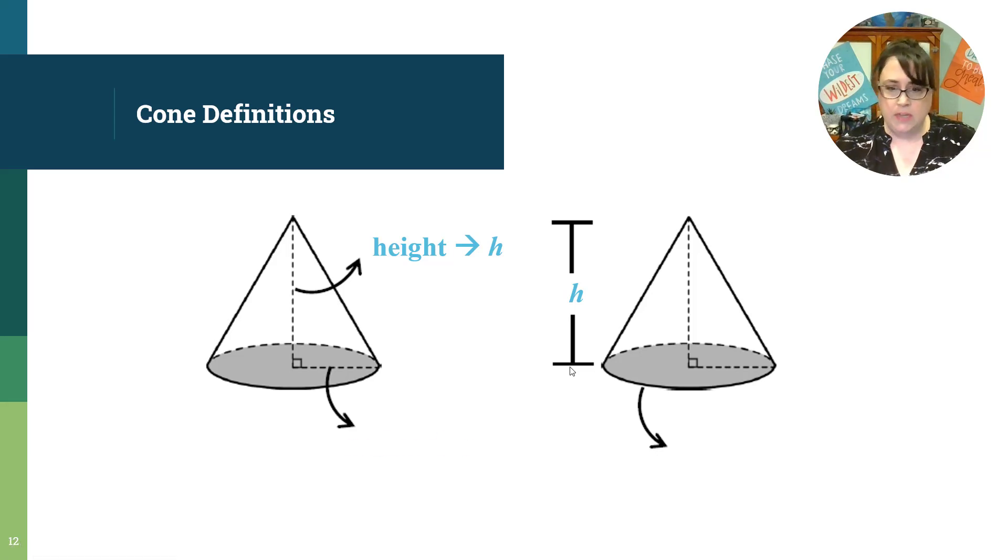And then you also have the radius on a cone and that goes from the center of the circle out to the outside edge of the circle. Sometimes though you'll see an arrow that comes on the outside of the circle and that is the base area and we denote it with a capital B. So be careful where you're looking at that arrow. If the arrow is touching a line it's talking about the radius. If it's not touching the line and it's touching the outside part of the circle, that's talking about the base area.